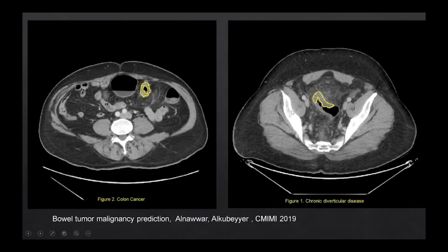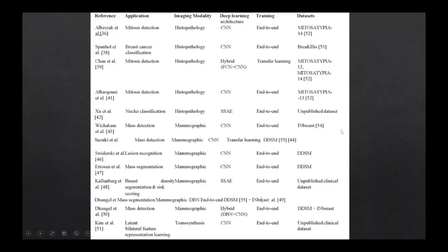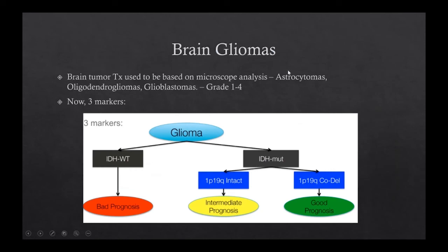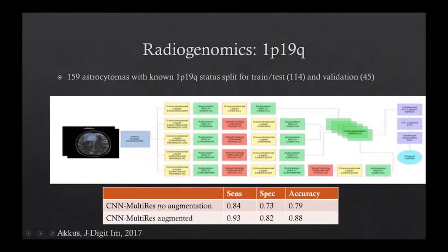We built a classifier to predict benign versus malignant lesions from CT scans, using mammography as gold standard alongside pathology. For example, one patient had a malignant invasive ductal carcinoma in the right breast and a benign fibroadenoma in the left — AI predicted these correctly without mammography. We also built a model to predict whether colonic wall thickening is due to colon cancer or chronic diverticular disease. In the last decade, there is substantial literature on CNNs for mass detection and malignancy classification, with studies achieving sensitivities of 93–95% and accuracy around 0.88 using architectures like ResNet-50.